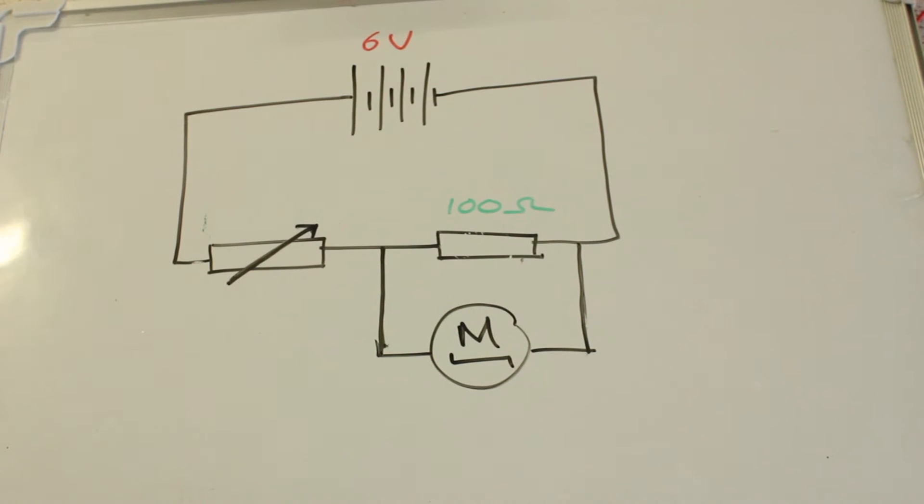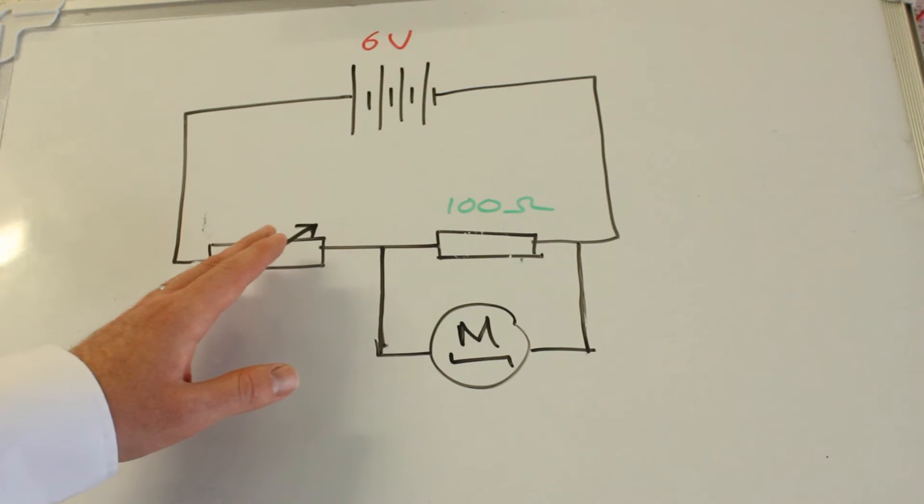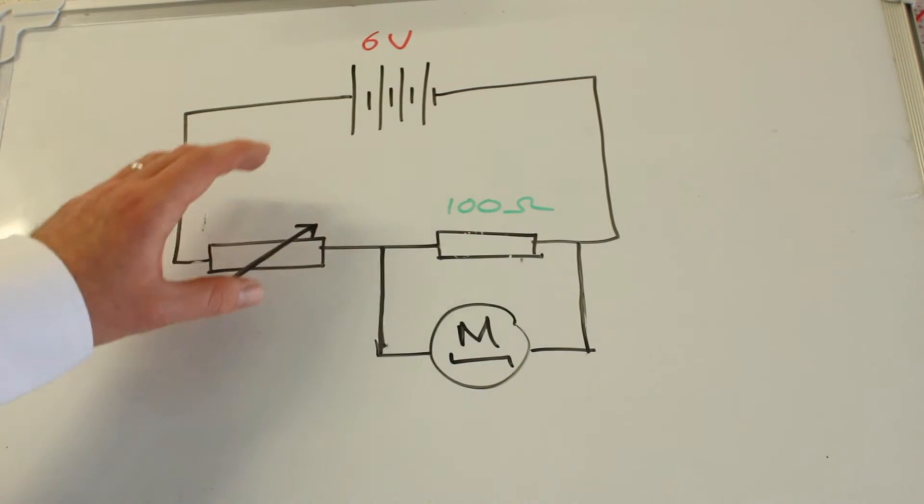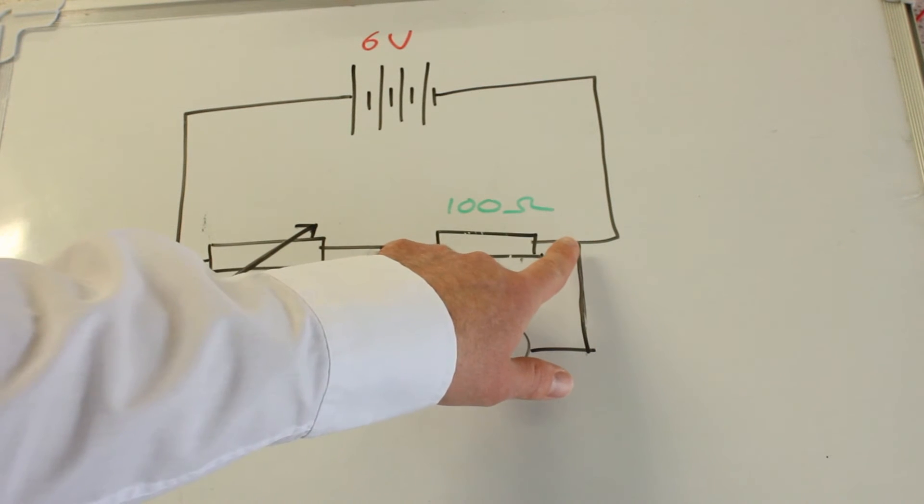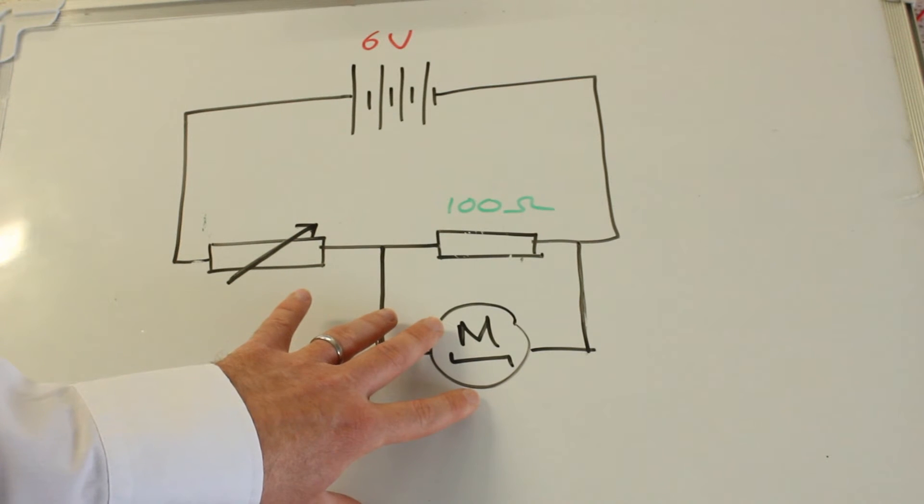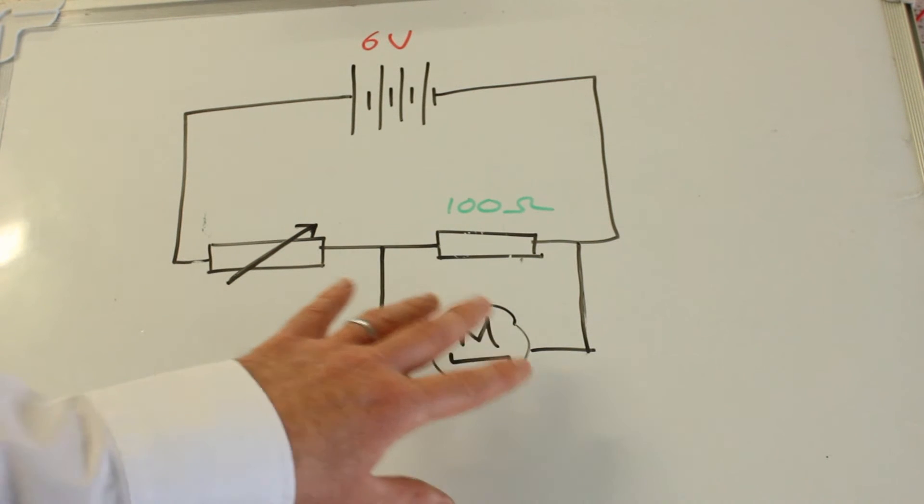So I then replaced the voltmeter with a motor, and you can see that as I reduced the resistance here, the ratio of this resistance to this resistance increased. Therefore the voltage across here was greater than the voltage across here, and the motor turns on. And I was able to control that ratio, therefore control the voltage here.